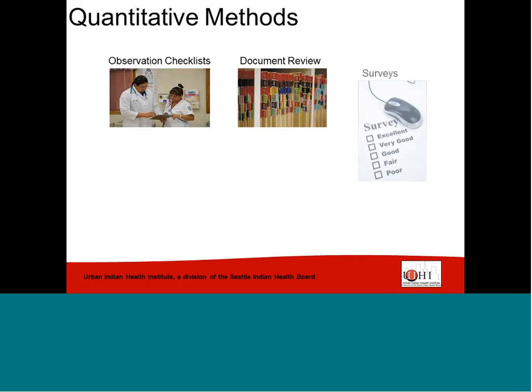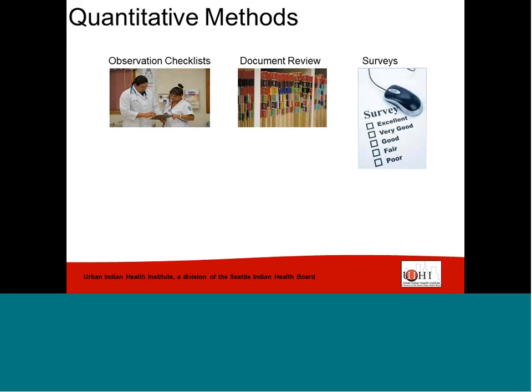Another quantitative method is surveys, which use standardized tools to measure an individual's characteristics, behaviors, knowledge, perceptions, attitudes, or beliefs. Surveys also allow you to gather descriptive data from a large number of people relatively quickly. Surveys can be done on paper, online, administered by an interviewer in person, or over the phone, giving us a lot of flexibility with this type of data collection method.